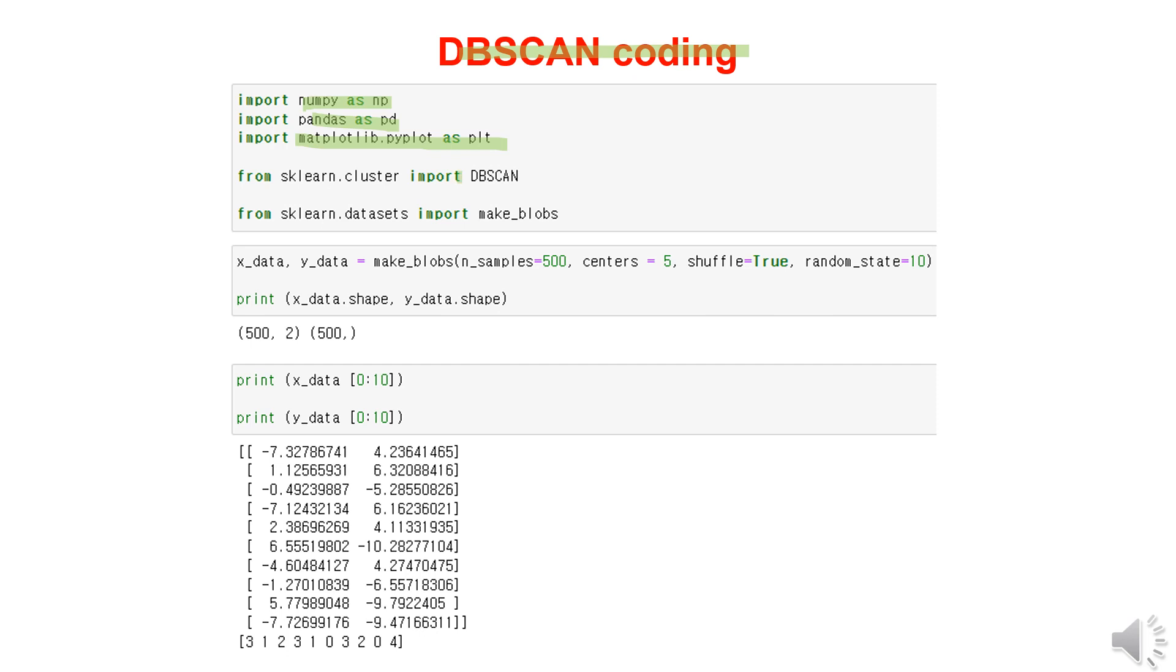Additionally, we'll import the DBSCAN library. Similar to hierarchical clustering and k-means clustering we discussed earlier, we'll use the make_blobs function provided by scikit-learn to create a virtual dataset. Here, n_samples indicates the number of data points, and centers represent the number of clusters. By setting n_samples to 500 and centers to 5, we generate a virtual dataset with 500 data points distributed among 5 clusters.